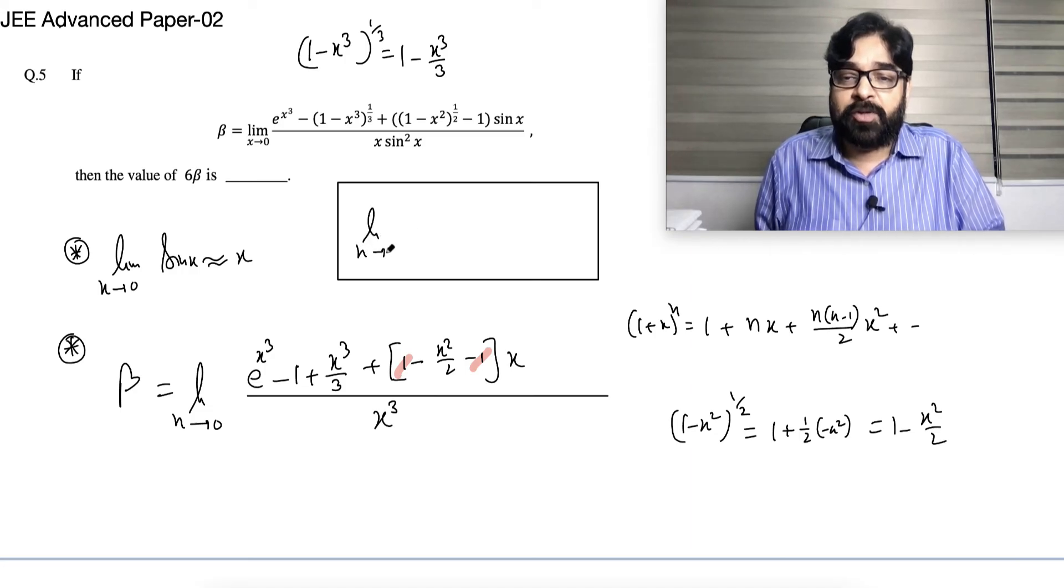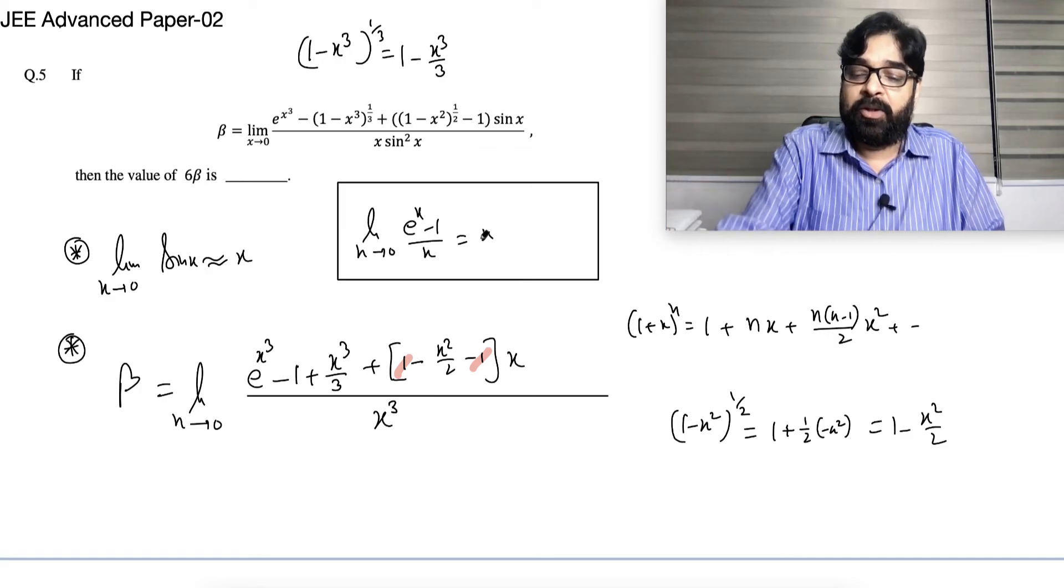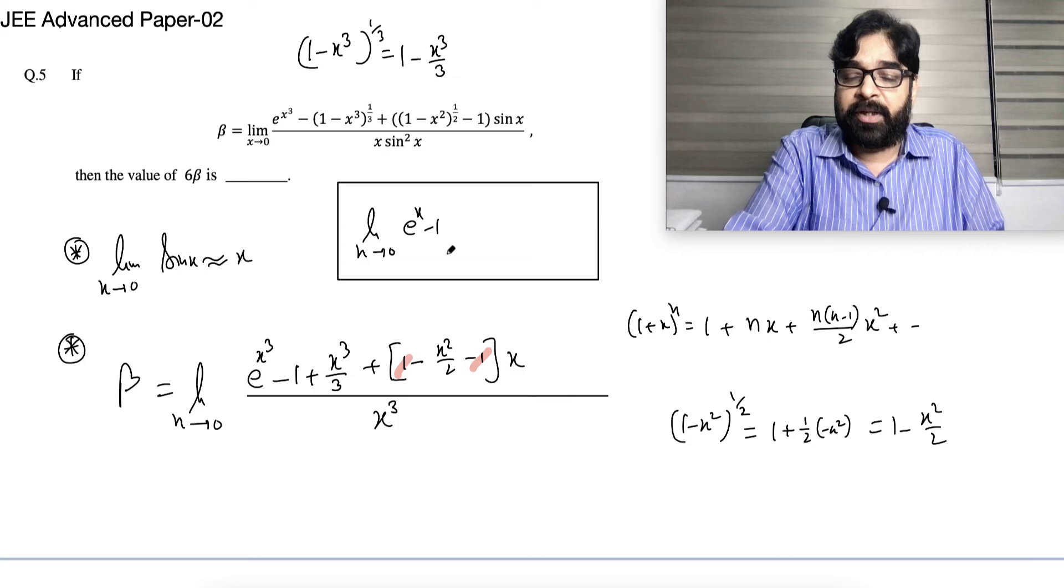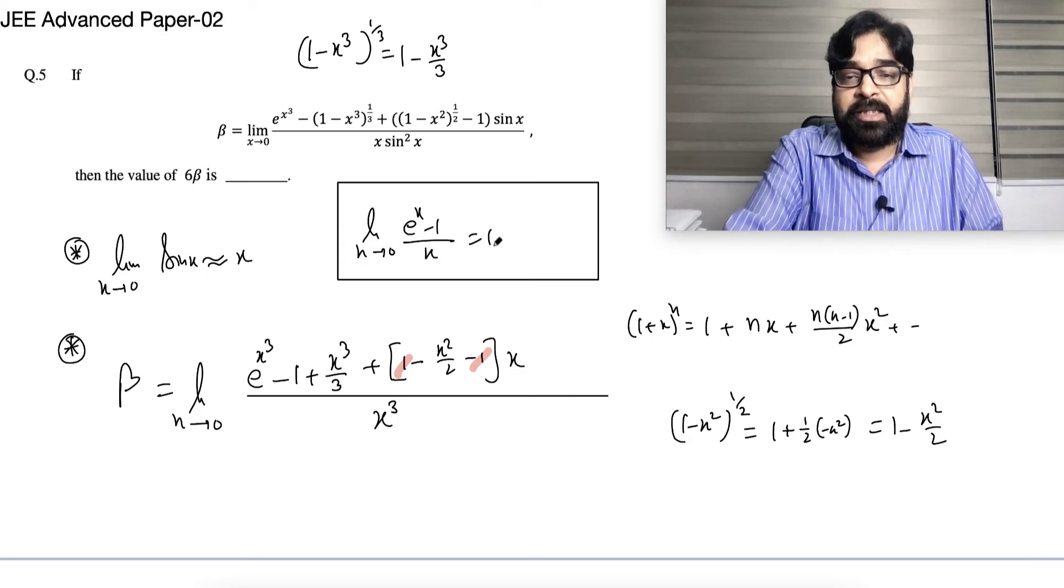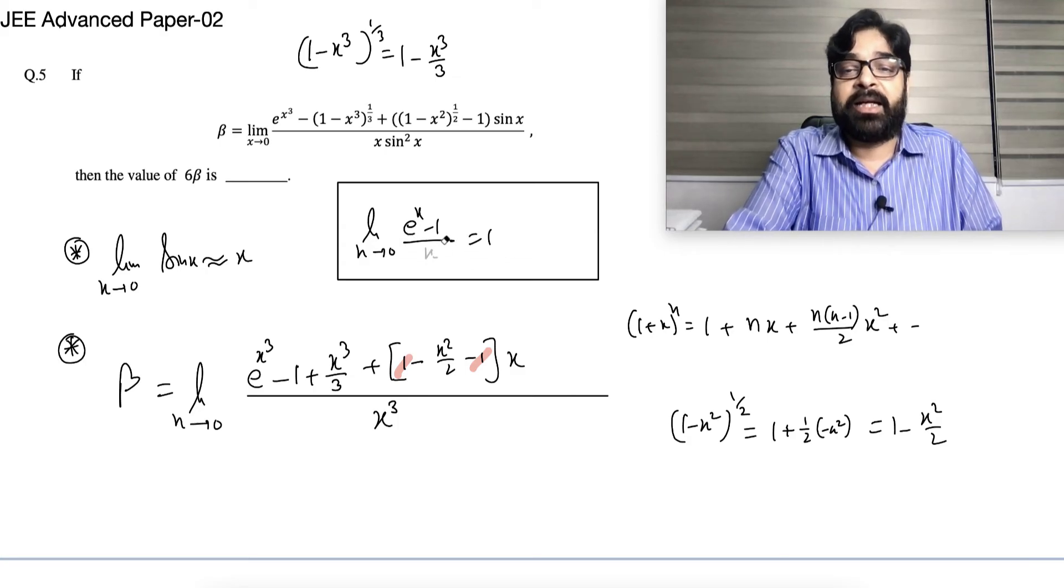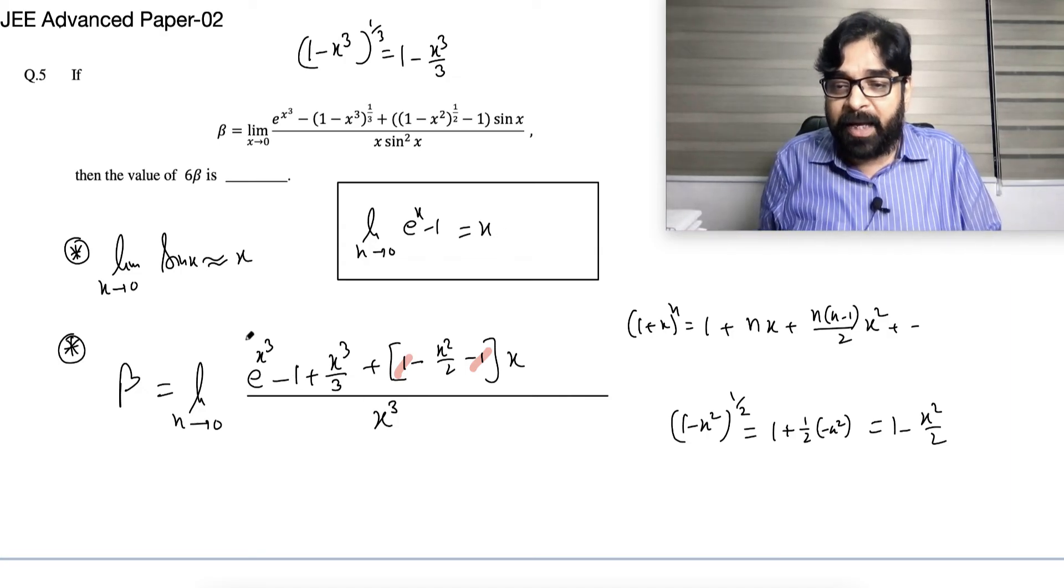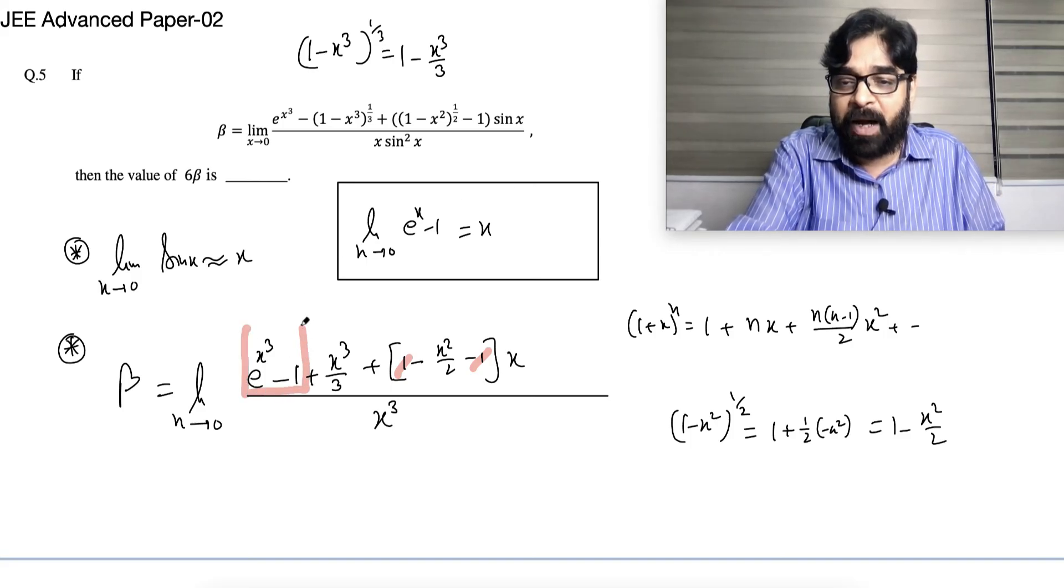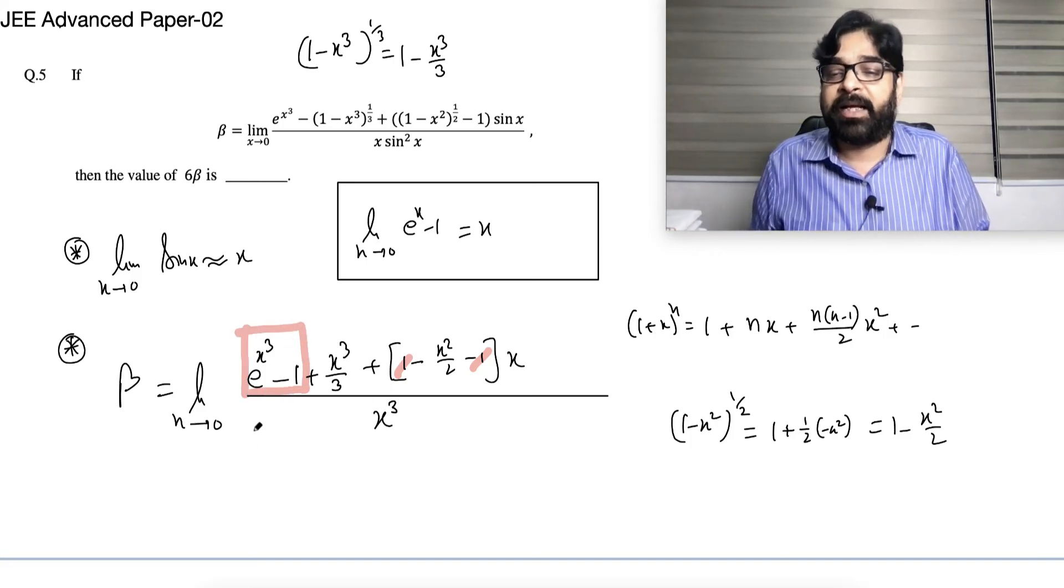Limit x approaches to 0, e^x - 1 by x, all of you know it's 1. So here, if you do approximation, I can see, sorry, I wrote something wrong. So this I can do approximation, this equal to x. This equal to x. So e^(x³) - 1, this part, this part, I can simply write x³.